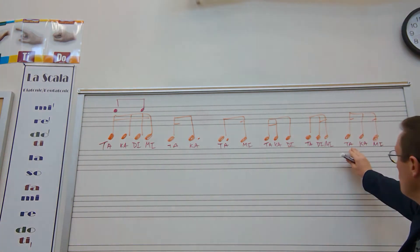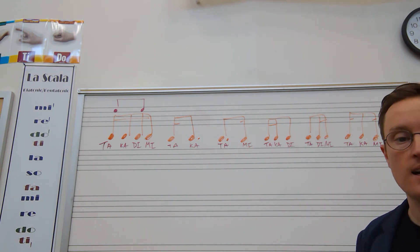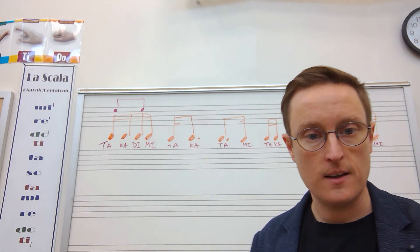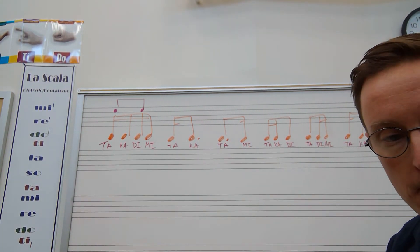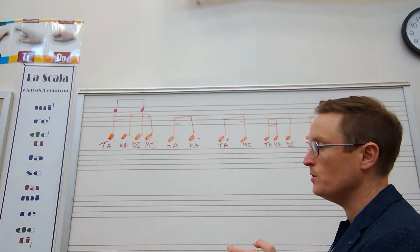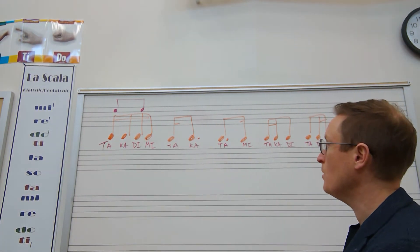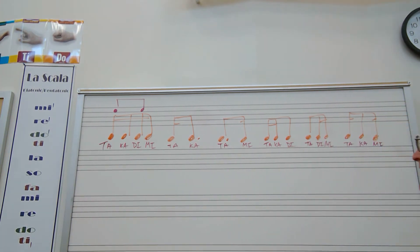And then this last part, we took a sixteenth note, then one eighth note, and then a sixteenth note. That sounds like this. Ta-ka-mi, ta-ka-mi, ta-ka-mi, ta-ka-mi. Now I want you to go through that line as if it were a measure, and we'll do it together slowly. One, two, ready, and go. Ta-ka-di-mi-ta-ka, ta-mi-ta-ka-di, ta-di-mi-ta-ka-mi.